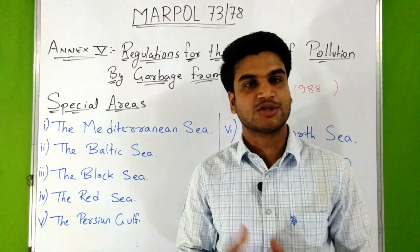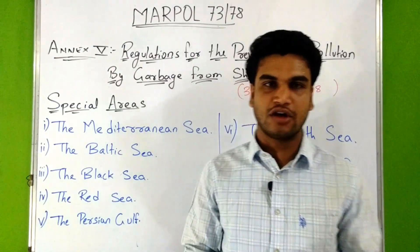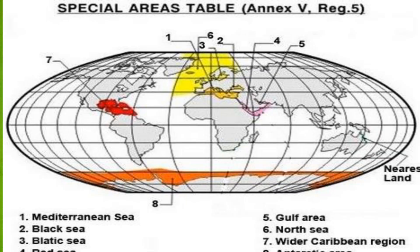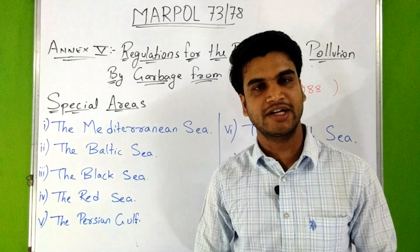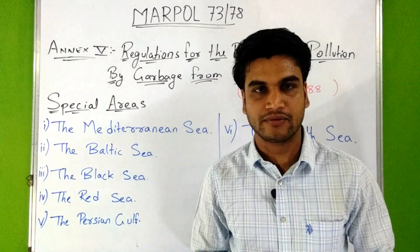The special areas defined under Annex 5 are: the Mediterranean Sea, Baltic Sea, Black Sea, Red Sea, Persian Gulf, North Sea, Antarctic area, and the wider Caribbean area.